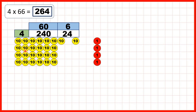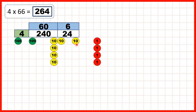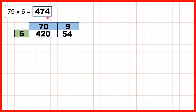And we can regroup our tens as well, because 10 tens can be exchanged for 100. So now you can see that we have 2 hundreds, 6 tens, and 4 ones. So that's 264.